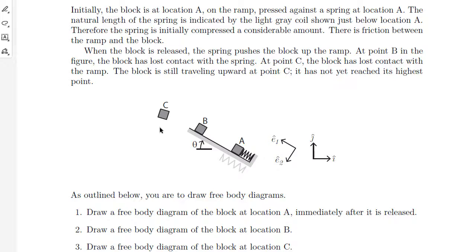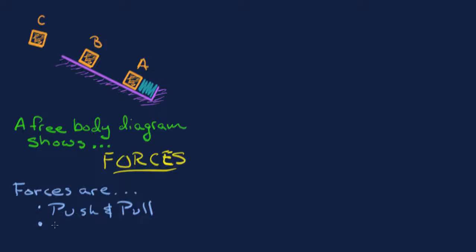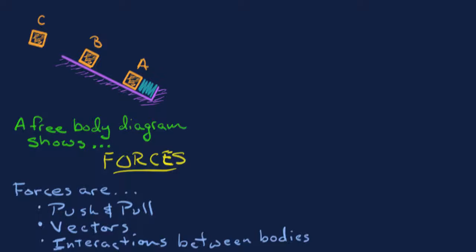Here is the drawing of the system with the block in positions A, B, and C. Now it's time to draw a free body diagram. A free body diagram shows forces — forces are things that push and pull on your object. Forces are vectors, and they are interactions between bodies. In this case we'll have interactions with the spring, the ramp, and gravity.